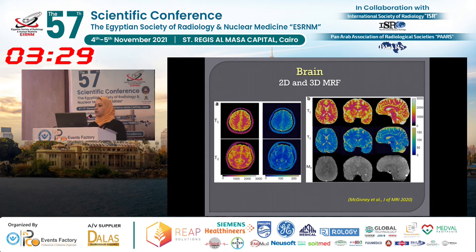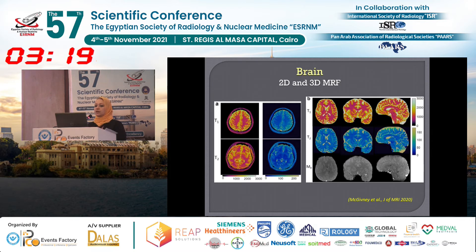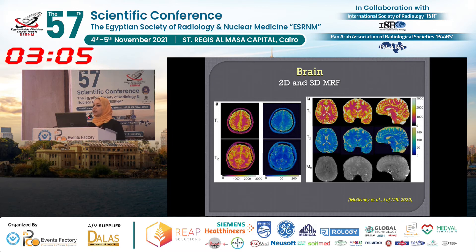Initially implemented as 2D acquisition, MRF was extended to 3D acquisition in order to obtain full volumetric coverage. This area shows the T1 and T2 maps of normal brain acquired from MRF, along with T1 and T2 maps derived from conventional MRI for comparison.